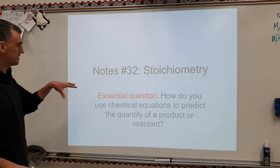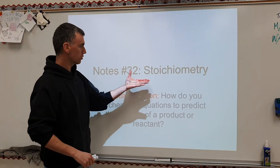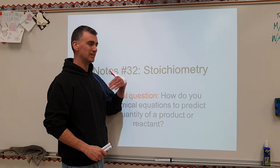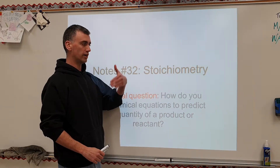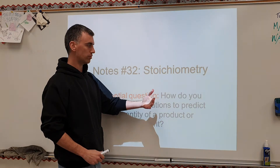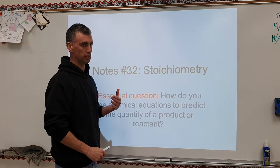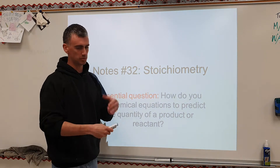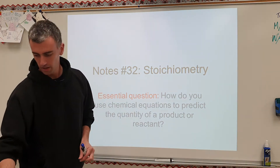Stoichiometry — this is the idea that this word means we relate one chemical to another chemical through a balanced equation to predict how much is made, consumed, or something like that.